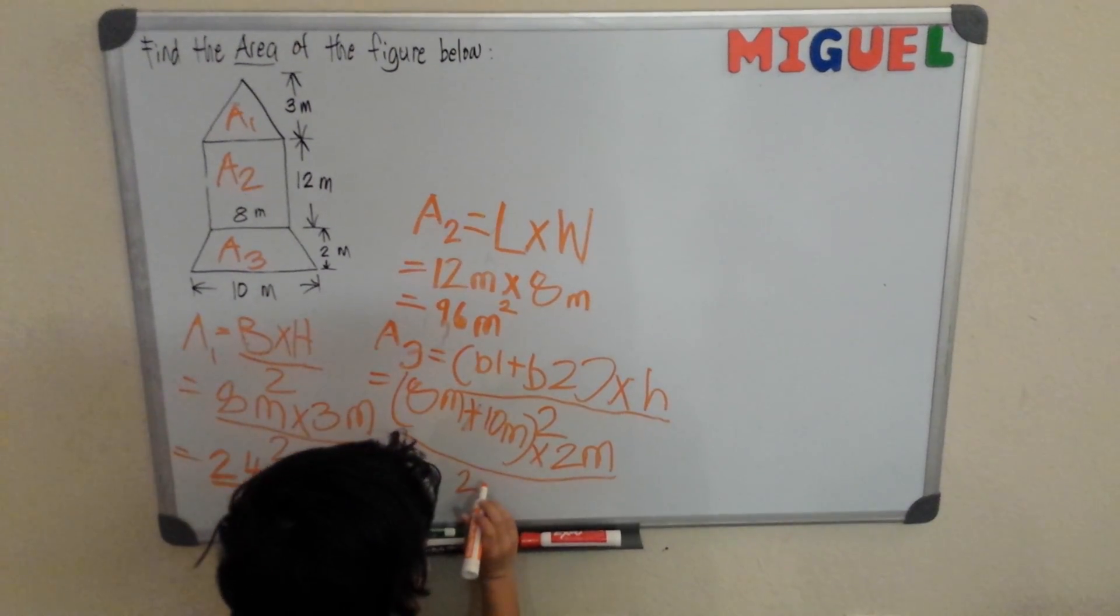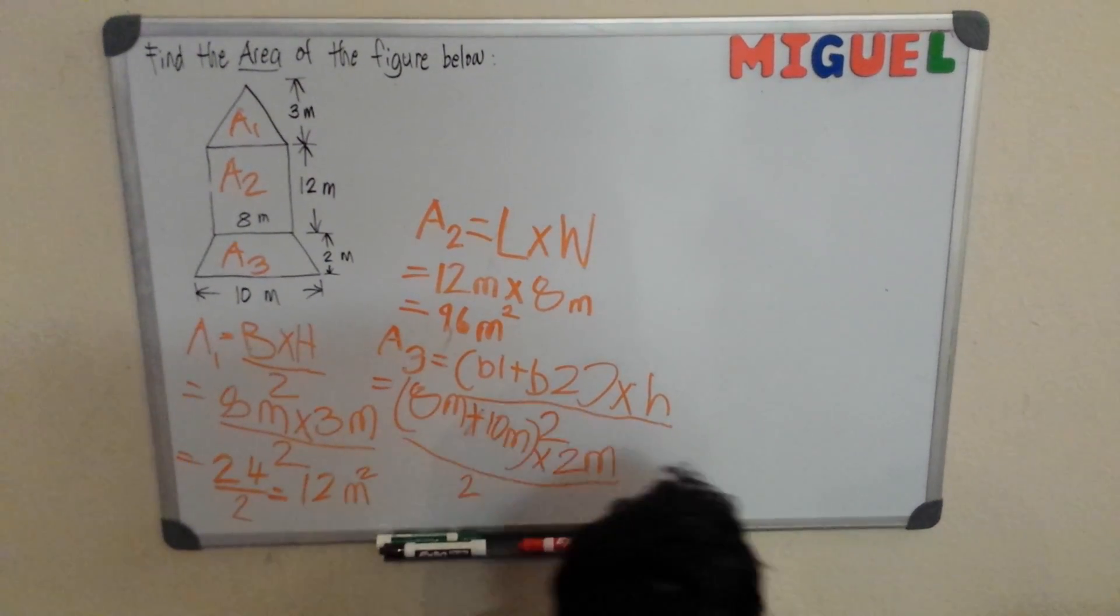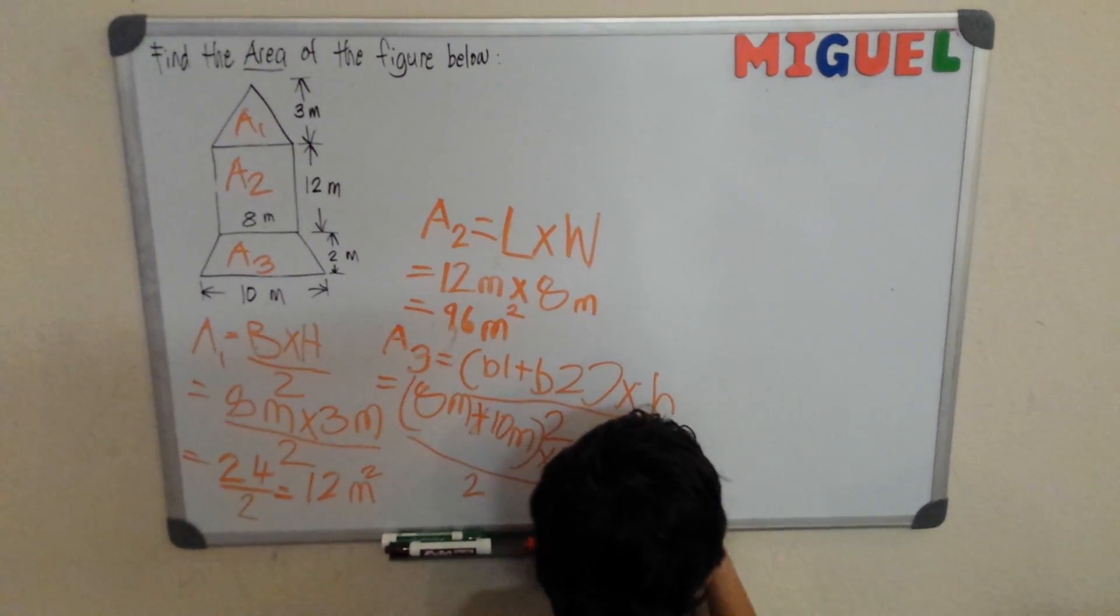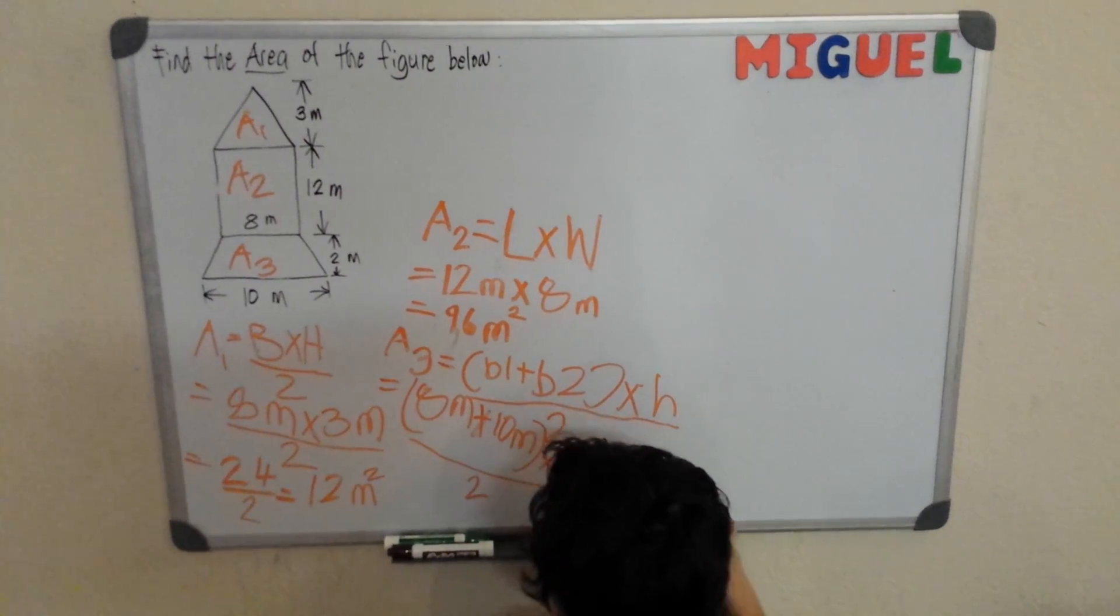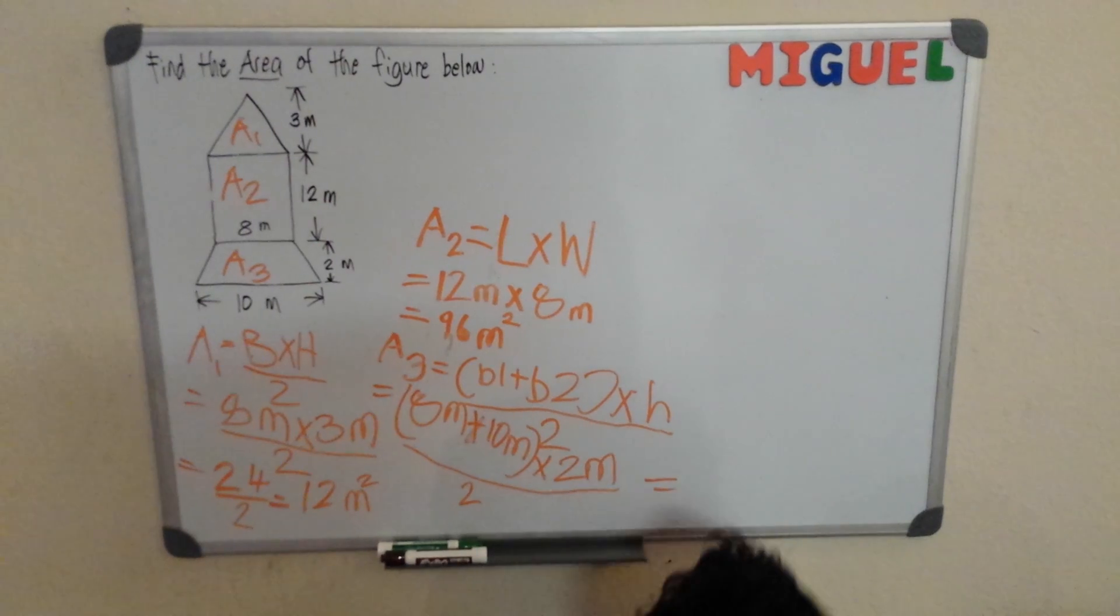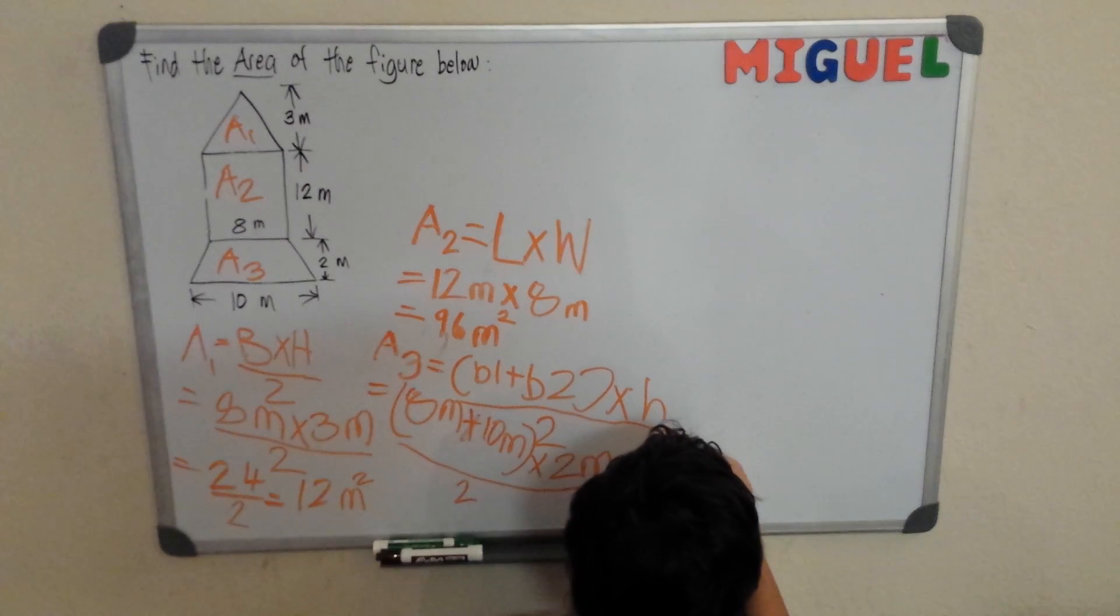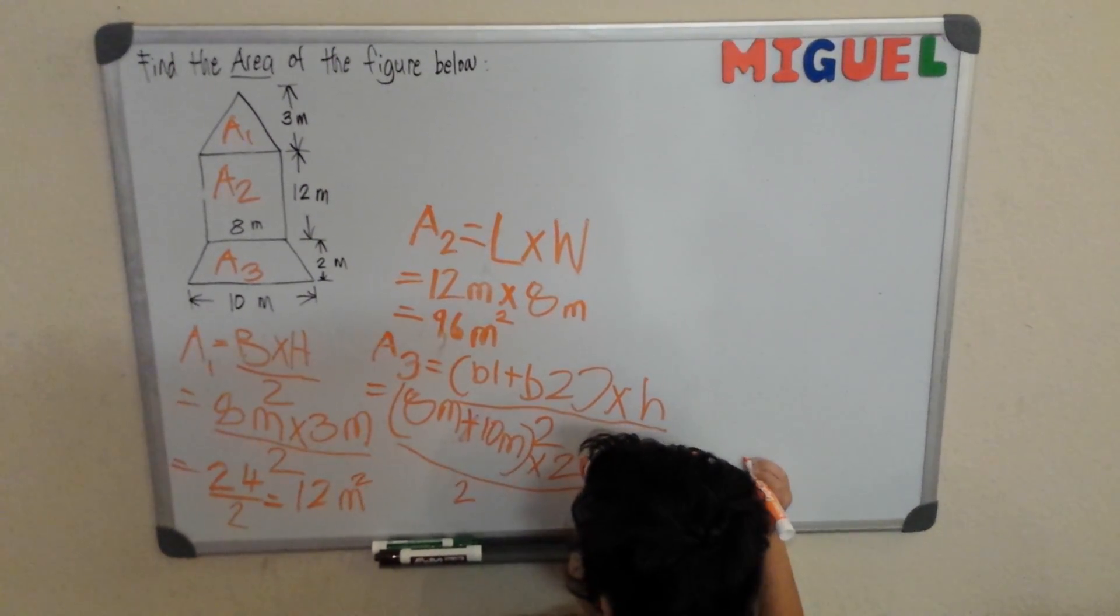So 8 plus 10 is 18 times 2 will give me 36. So equals here because there's no space. It's a tiny space.